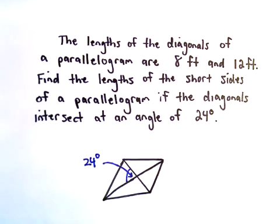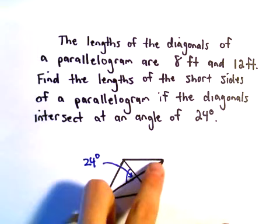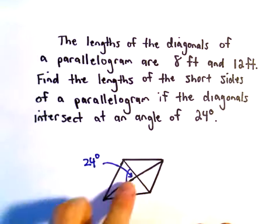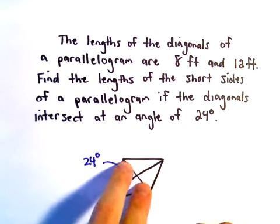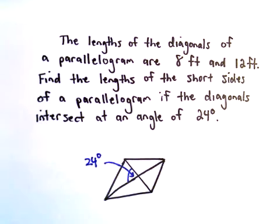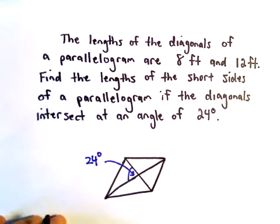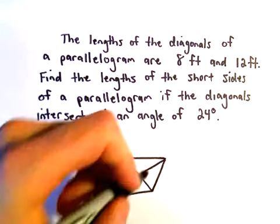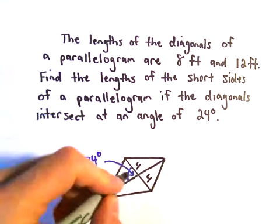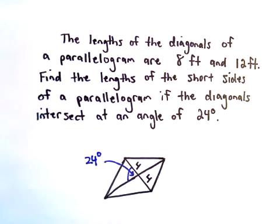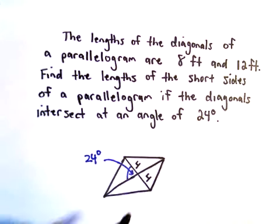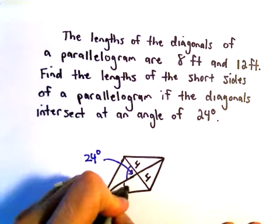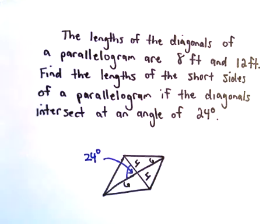Again, for a parallelogram, recall that the diagonals intersect and cut the diagonals in half. So one parallelogram had a diagonal of 8 feet. If that gets cut in half, one side will be length 4, the other will be length 4. Also, one side had 12 feet, so if you cut that in half, it'll be 6 and 6.